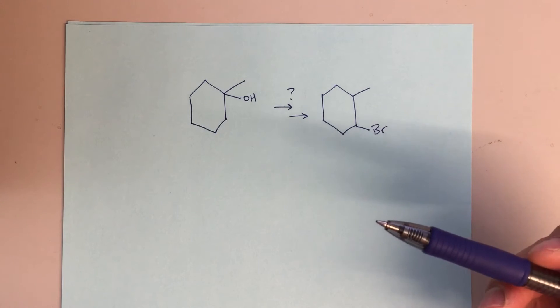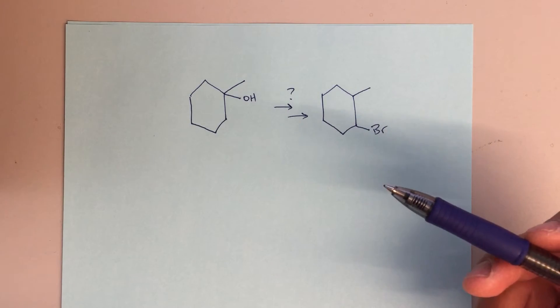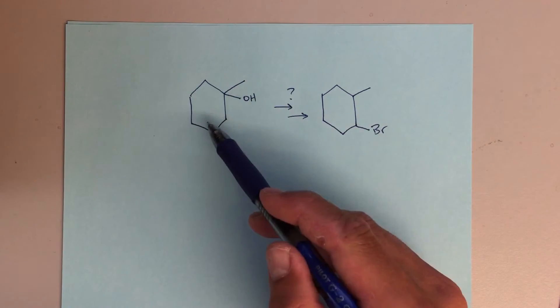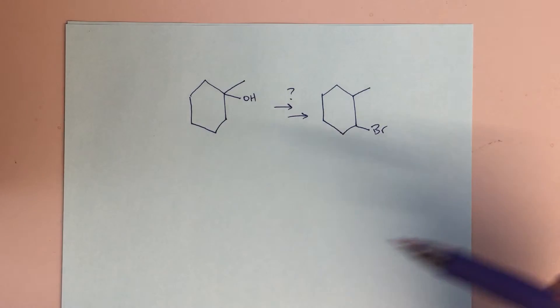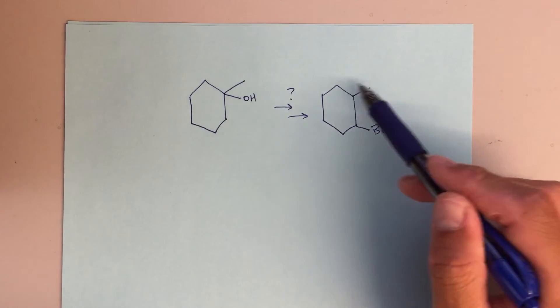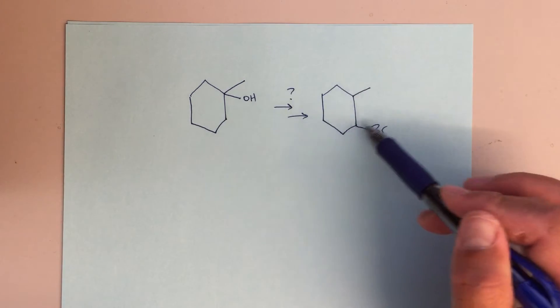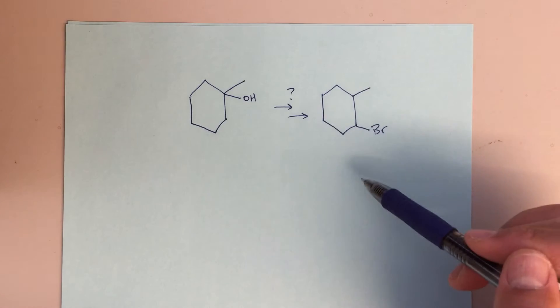Really, the strategy that we need to be thinking about here is how do I go from this starting material to this product? But another way to think about it is, how do I know to make this product? How do I know how to get to this brominated product?